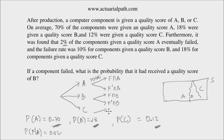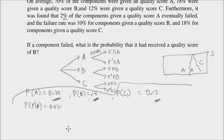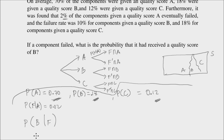Given a quality score of C, you may have a failure, or you may have a non-failing component: F complement intersection C. The question is to find, if a component failed — given that it failed — what is the probability that the component had received a quality score of B? That is, what is P(B | F)? Since the question says 'if this happened,' this tells you it is a conditional probability.